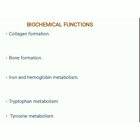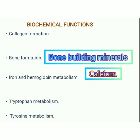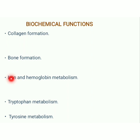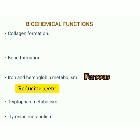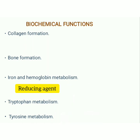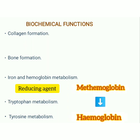In bone formation, Vitamin C is required to regulate bone-building minerals like calcium. It is also needed to destroy cells that cause damage to bone and help in proper development of bones and tissues. In iron and hemoglobin metabolism, Vitamin C acts as a reducing agent — our body absorbs iron only when it is in ferrous form, so Vitamin C converts the ferric form of iron into ferrous form, helping in absorption of iron by the small intestine. It is also helpful in the conversion of methemoglobin to hemoglobin.